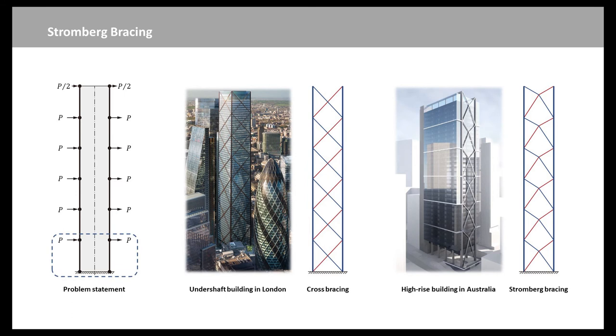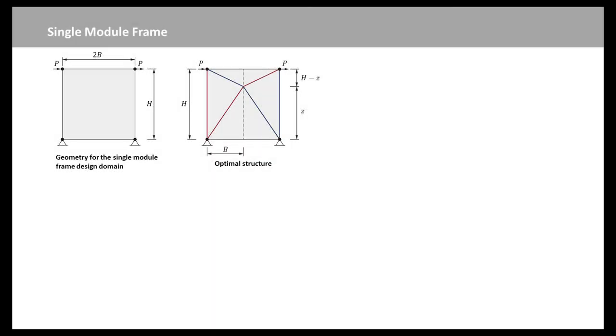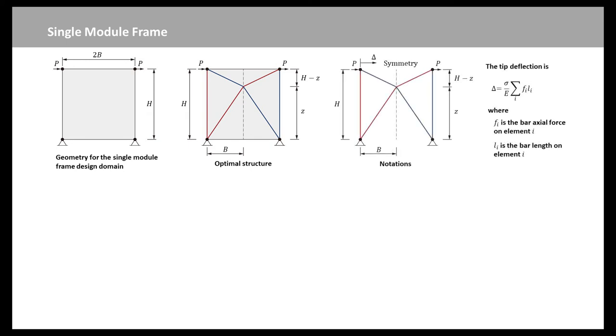In order to compare these two different types, we study a single module bracing. In this problem, two-point loads representing the wind lateral force acting on the frame are applied at the top left and right corners. The height of the design domain is given as h, the width as 2 times b, and the height of the bracing intersection point as z, letting us to set the height of the bracing point z be the design variable.